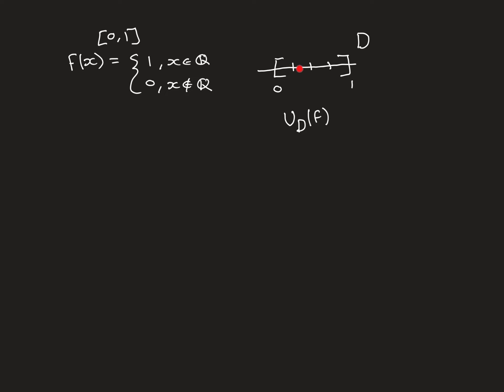For the upper Riemann sum of the Dirichlet function over any dissection: any interval in the real line always contains a rational number, as proved in earlier videos in this real analysis playlist. So in every subinterval, the function obtains the value 1, which is its maximum. Therefore the supremum over every subinterval is always 1, and the upper Riemann sum equals 1 times the sum of all the interval lengths, which is 1 times 1 = 1. This holds no matter how fine the dissection is.